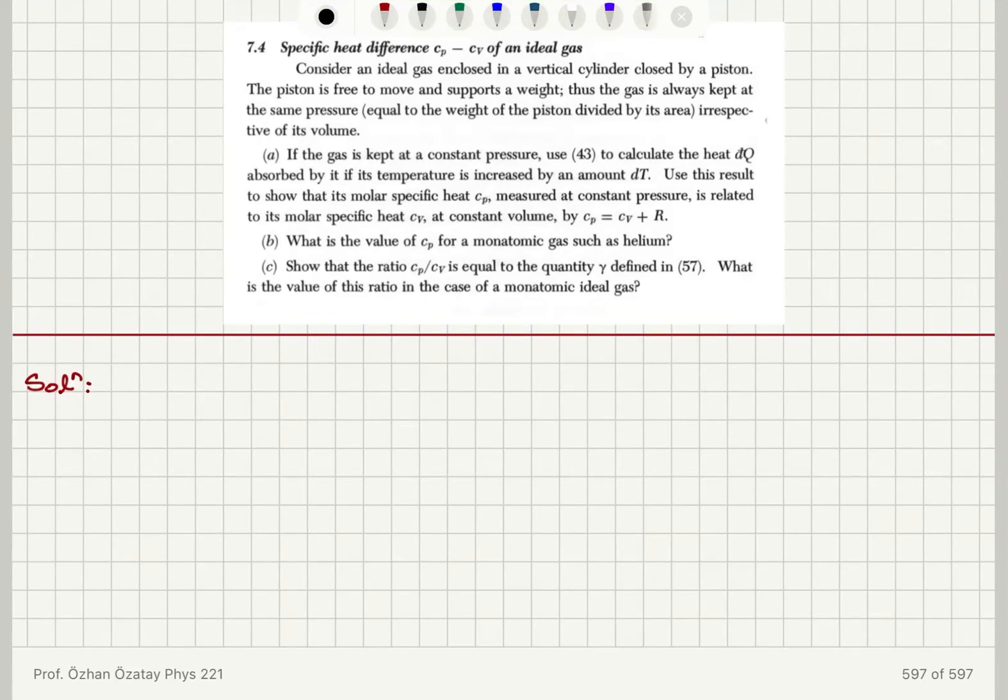Consider an ideal gas enclosed in a vertical cylinder closed by a piston. The piston is free to move and supports a weight, thus the gas is always kept at the same pressure.